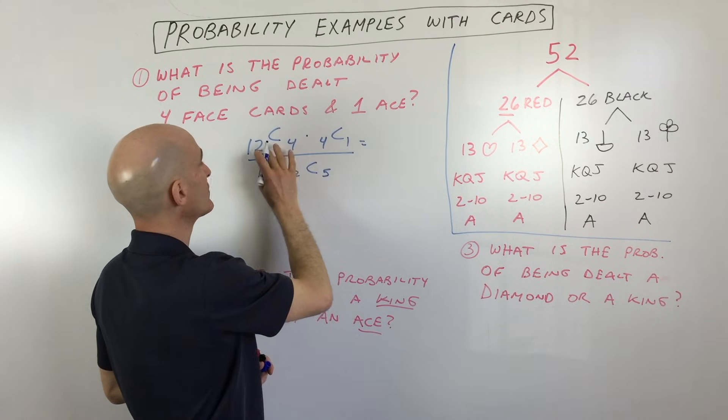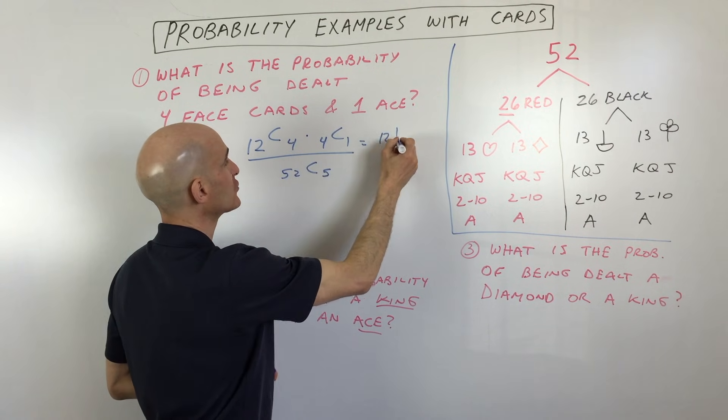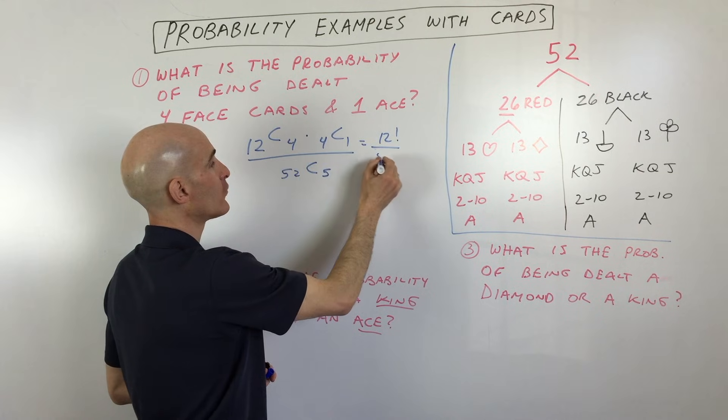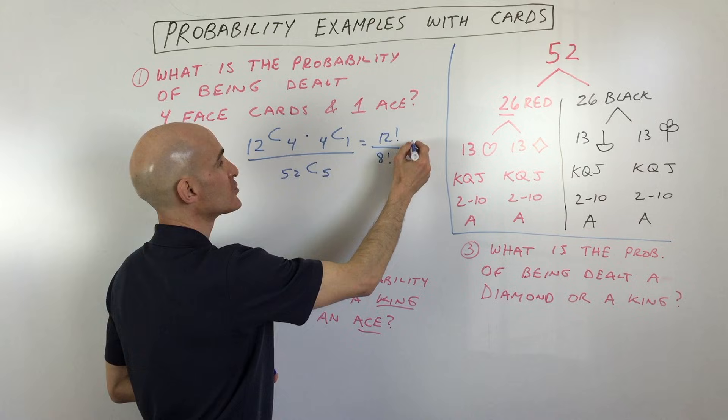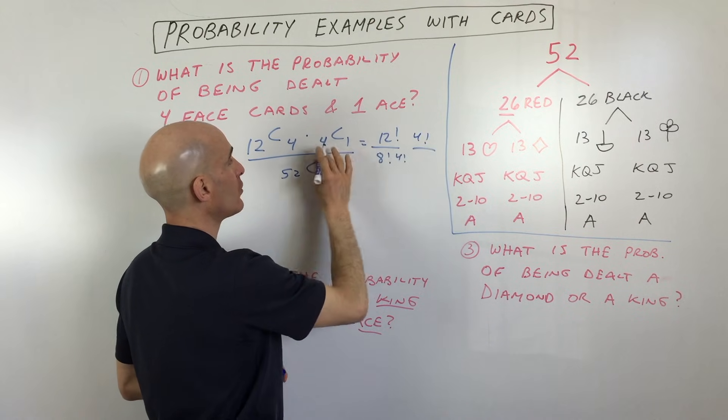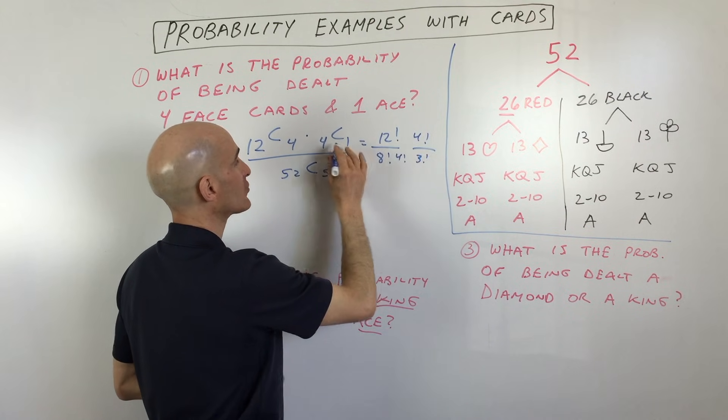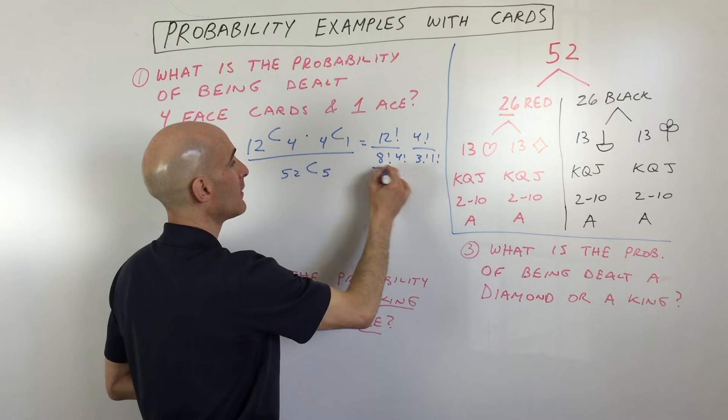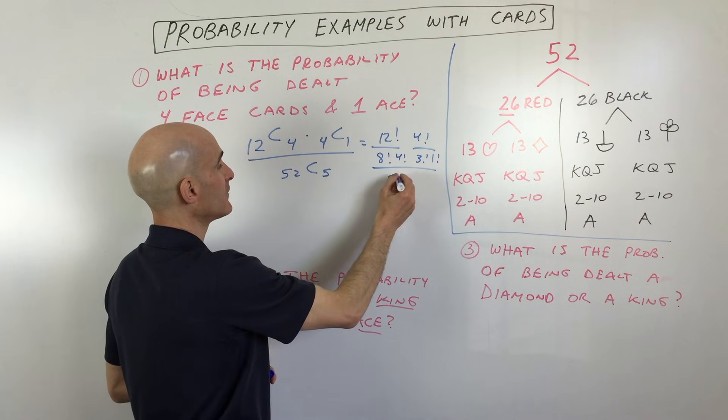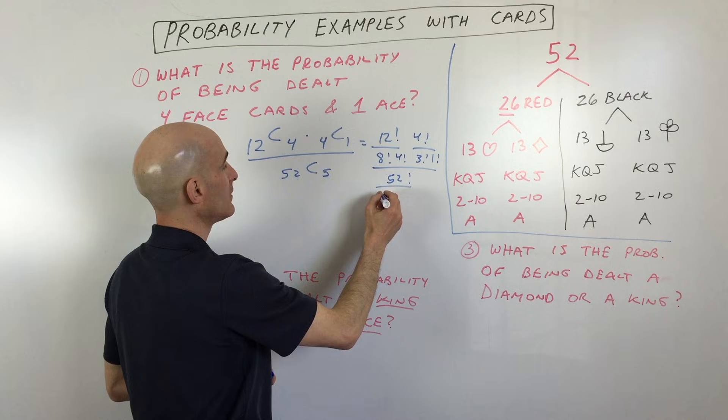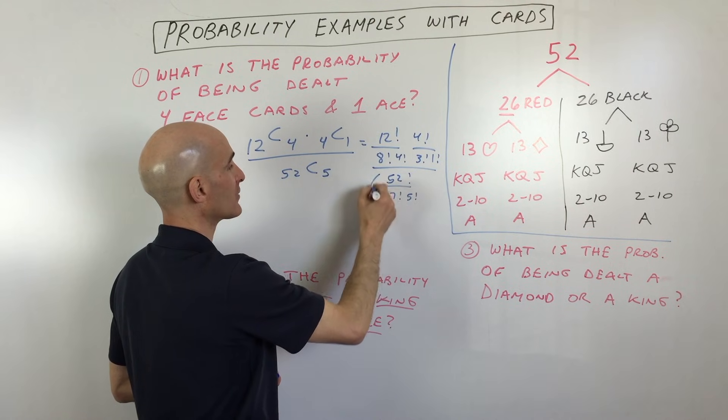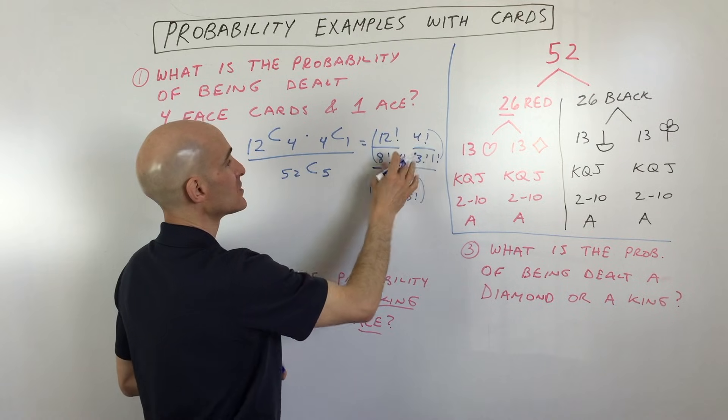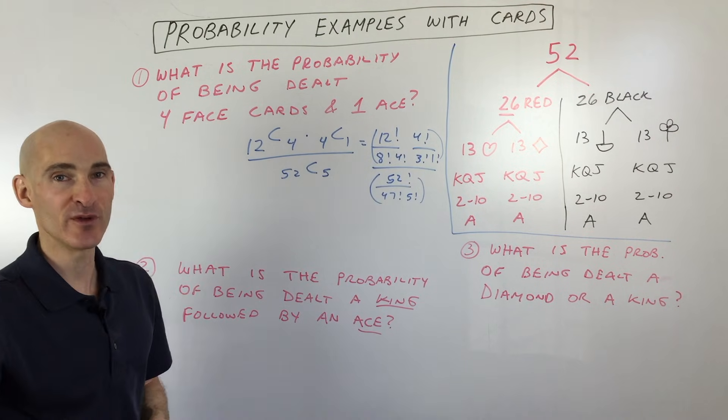And just a quick note here, I'll show you with the 12 choose four, this is 12 factorial over 12 minus four, eight factorial, four factorial. Four choose one is four factorial over four minus one, three factorial, one factorial, all divided by 52 factorial, 52 minus five, which is 47 factorial, five factorial. So if you simplify that, you're going to get the probability.